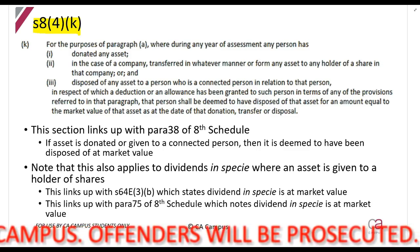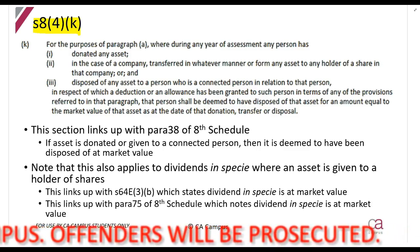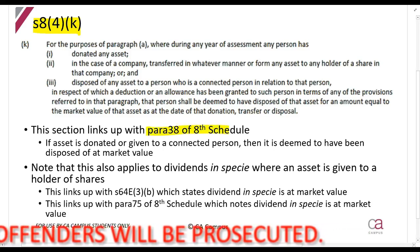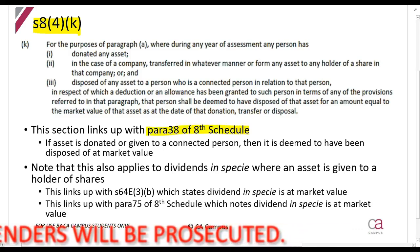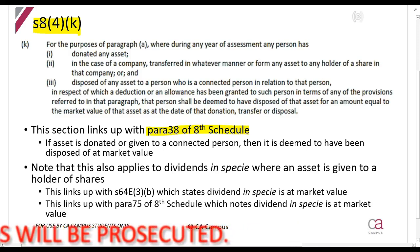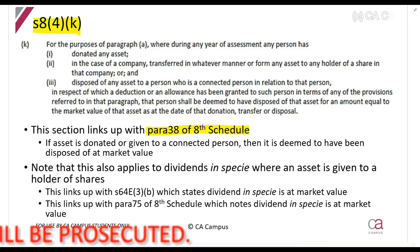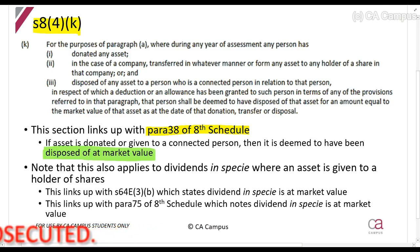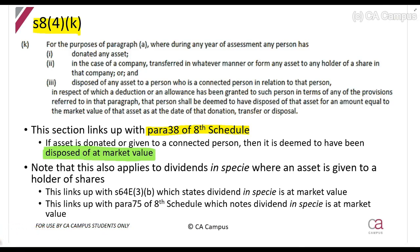You'll remember when we looked at paragraph 38 of the 8th Schedule — that's for CGT — it tells you that if you donate an asset, or give it as a dividend in specie, or to a connected person, then you are treated as if you dispose of it at market value. Now section 8.4k is just the recoupment side of it, because the 8th Schedule only talks about capital gains, and this is the income tax side, so it talks about recoupments.